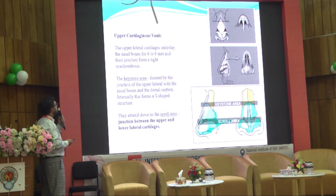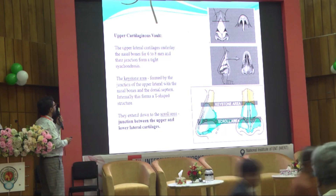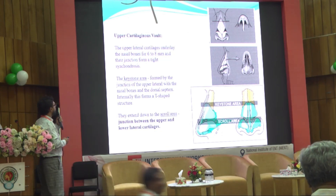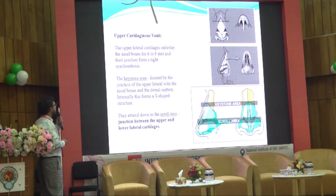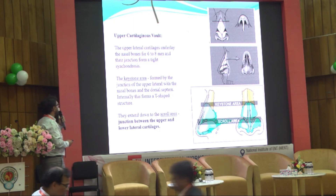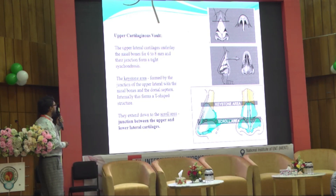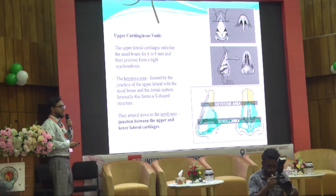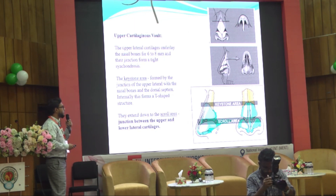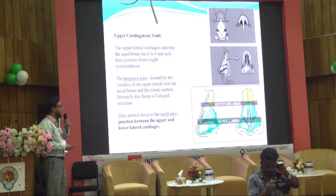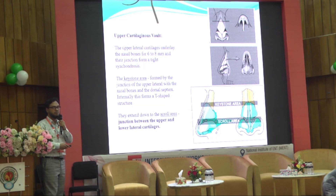The upper lateral cartilage underlays the nasal bone for 6 to 8 mm, and the junction forms a tight synchondrosis called the keystone area, formed by the upper lateral cartilage, nasal bone, and dorsal septum. Internally it forms a T-shaped structure. The keystone area extends down to the scroll area, which is the junction between the upper and lower lateral cartilage. The keystone area is important for dorsal stability, while the scroll area is important for nasal tip stability.